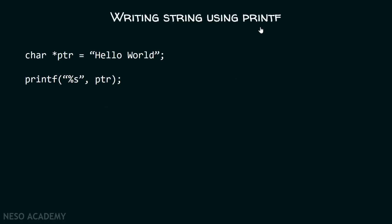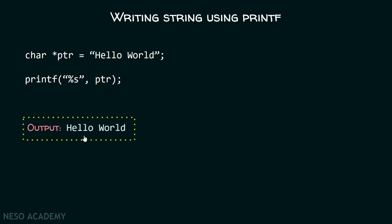Writing strings using the printf function is very simple. We just have to mention two arguments within printf: one is %s and the other is the pointer to the first character. We know that a string literal causes the compiler to automatically allocate memory and return the pointer to the first character. We store this address in a pointer and pass it as the second argument to printf. It will display the output 'hello world' on the screen.